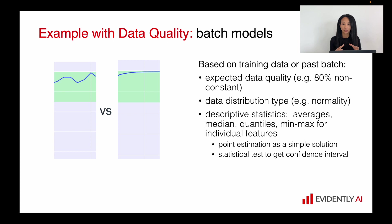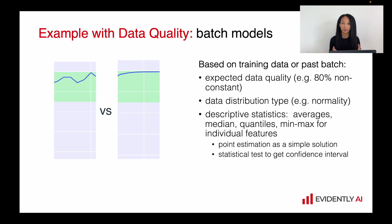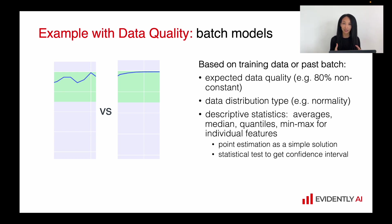There are many metrics that can only be calculated in batch mode — for example, drift detection methods, which expect two distributions to compare. In this case, you need reference data — such as a validation dataset or a previous batch where you were happy with model performance — and you take the most recent batch as current data and compare distributions with the reference. This also works with quality metrics like precision and recall, which you can calculate on top of a batch of data and analyze the results.